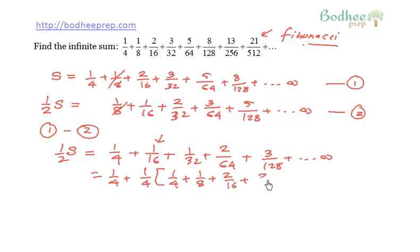Now observe that this particular thing is nothing but the original expression itself. So I can write this as 1/4 + 1/4 times S, and this is equal to half of S.